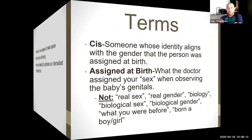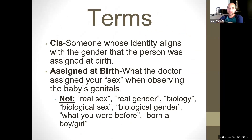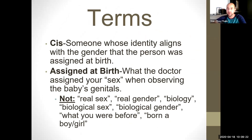I want to cover a couple of terms before we start. The term cis, or some people say cisgender, is someone whose identity aligns with the gender that the person was assigned at birth.